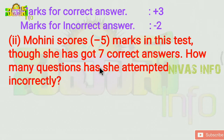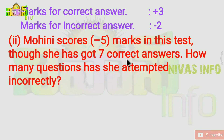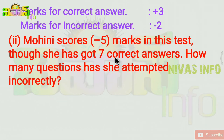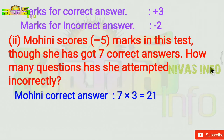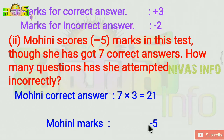Mohini has minus 5 marks in the test. She has got 7 correct answers, so marks from correct answers: 7 times 3 equals 21. But she has minus 5 marks total.